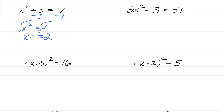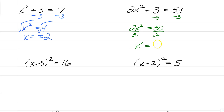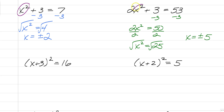Second example: the first thing you would do is subtract 3 from both sides, and you have 2x squared is equal to 50. Divide both sides by 2, because we're still getting x by itself, and we have x squared is equal to 25. So once you square root both sides, we're going to have x is equal to plus or minus 5. That's how you solve by square root when we have an x squared that's isolated.